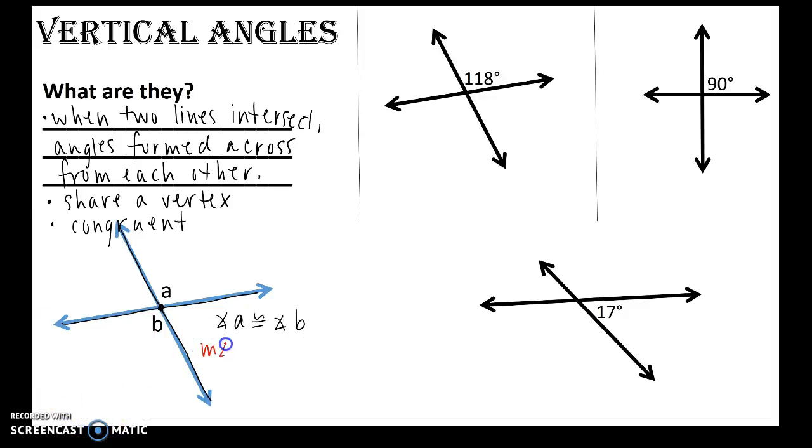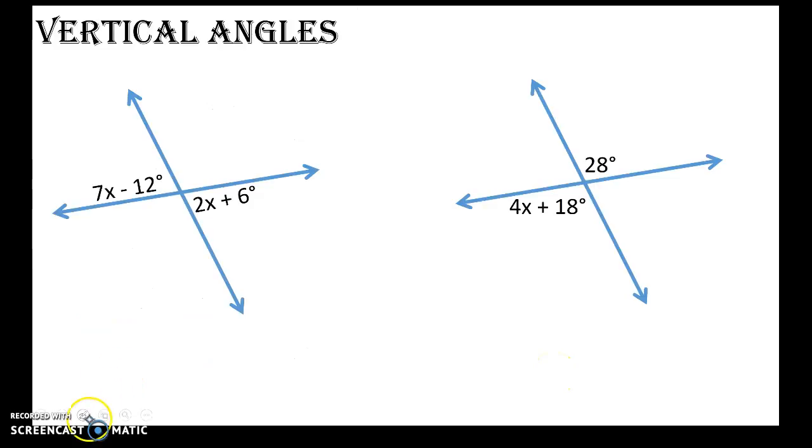And I know angle a is congruent to angle b, so what can I conclude from that? That the measure of angle a is equal to the measure of angle b. Okay, so looking at this figure, 118 degrees is here, this angle is its vertical angle, so this angle measure would be 118 degrees as well. Looking at this figure, if this is a right angle 90 degrees, then its vertical angle, the angle across from it, would be 90 degrees as well. And then lastly, these intersecting lines, if that angle is 17 degrees, then its vertical angle would have a measure of 17 degrees as well.